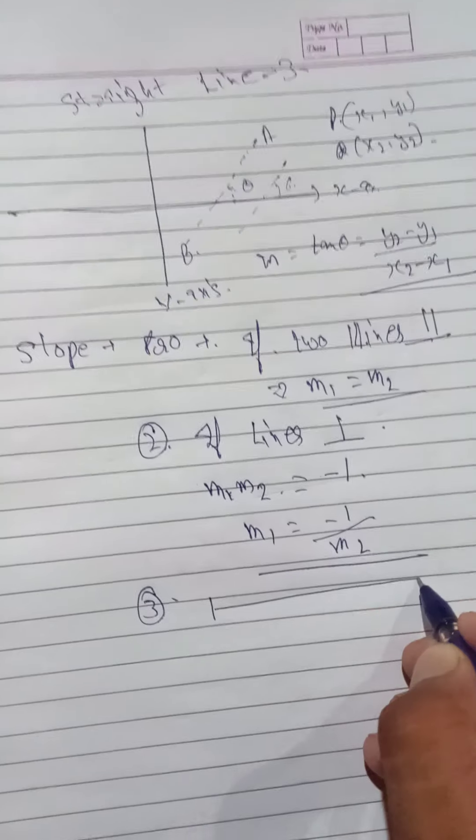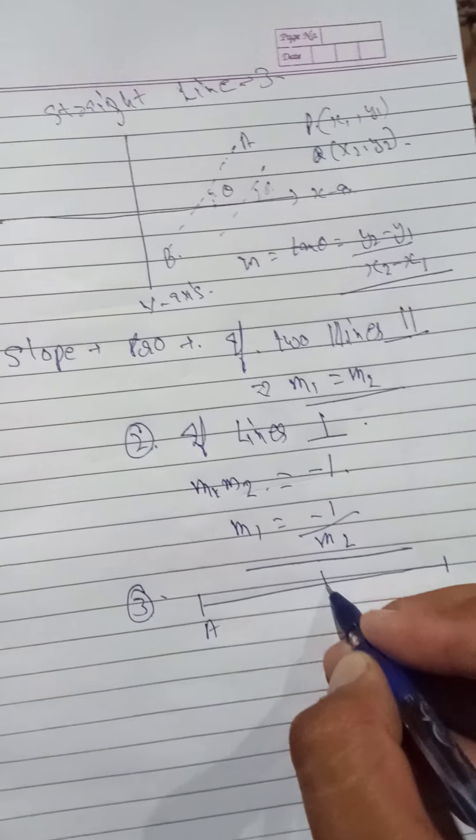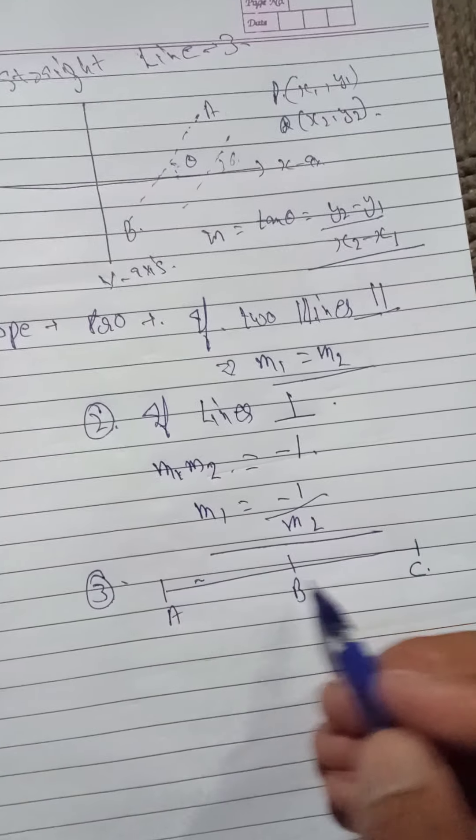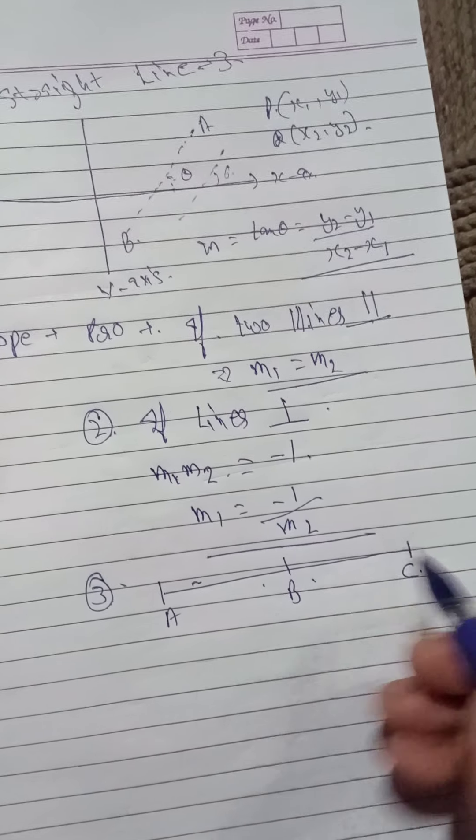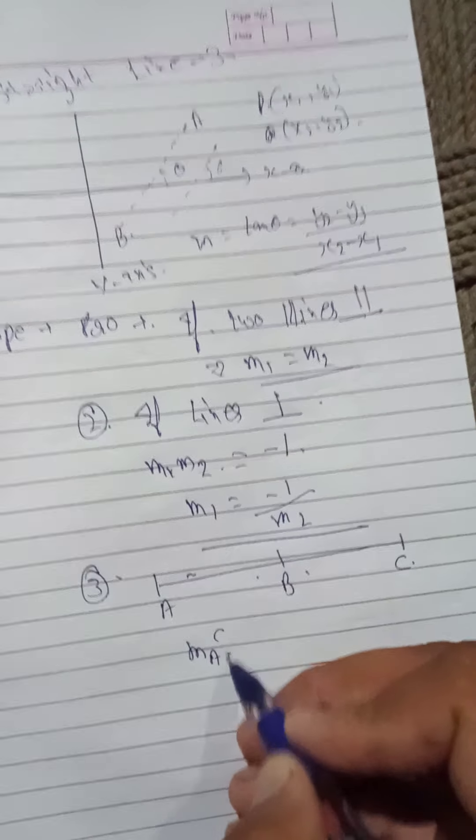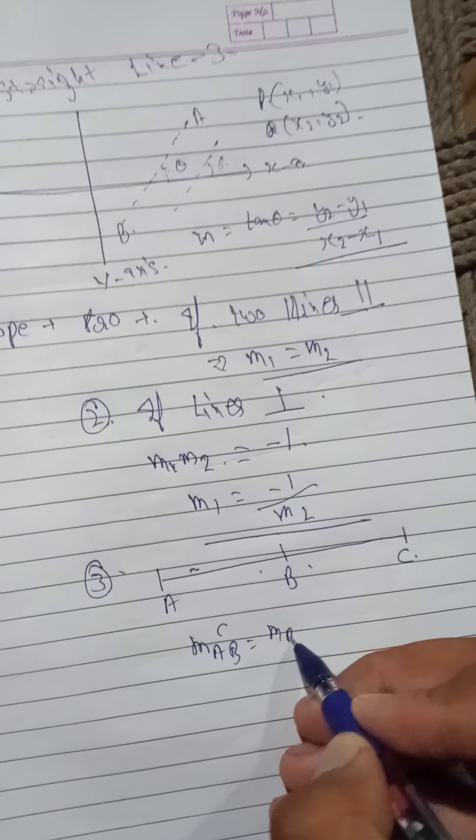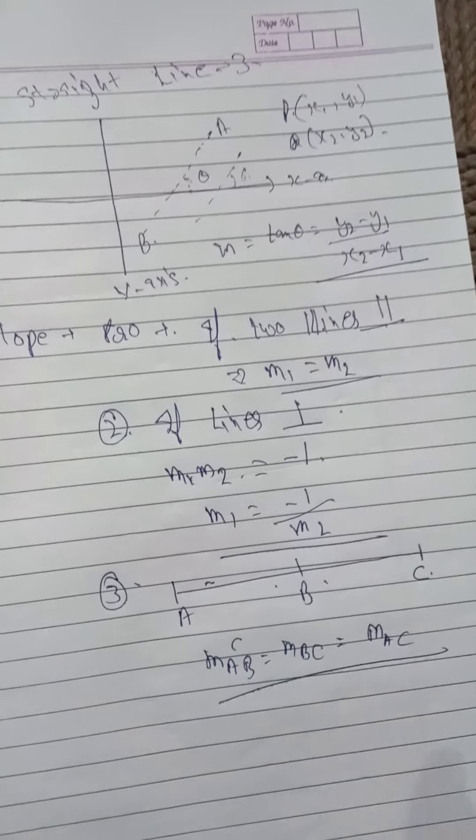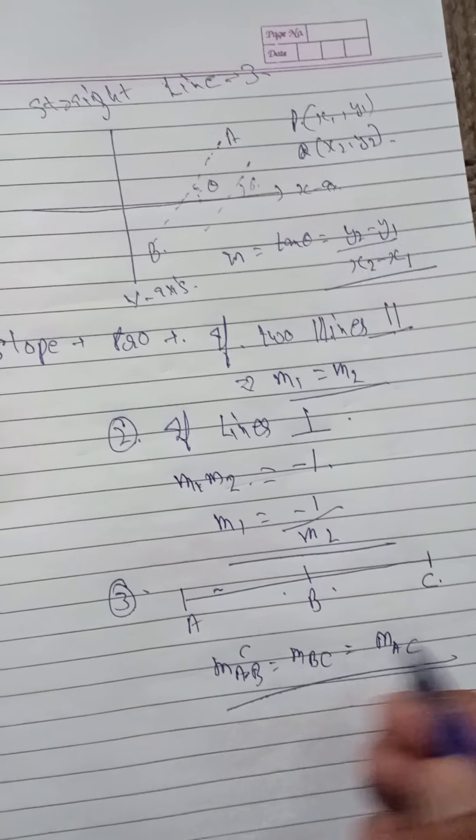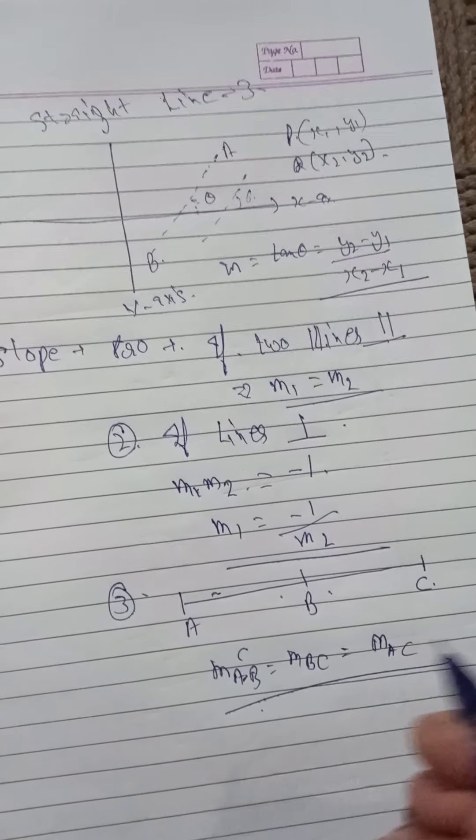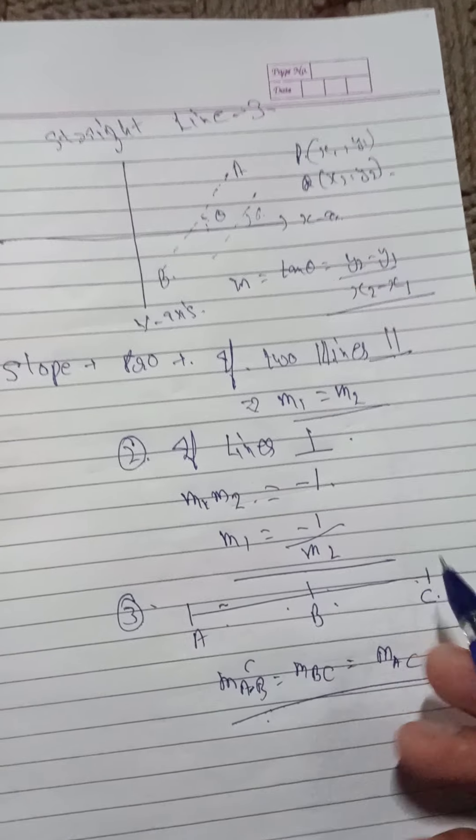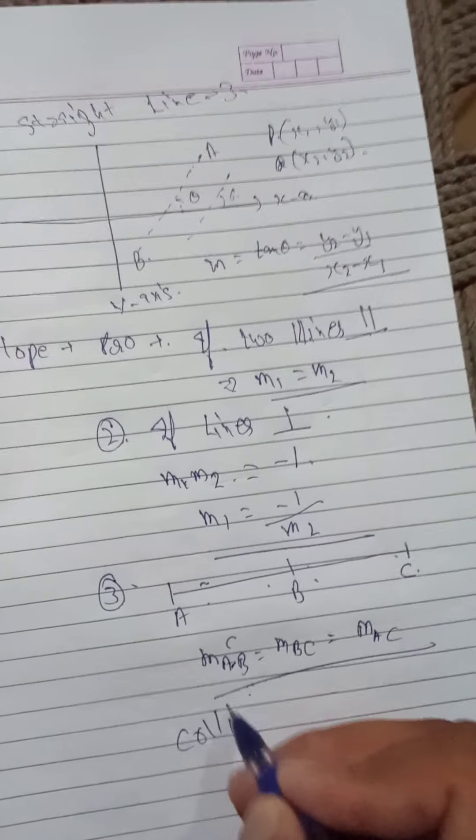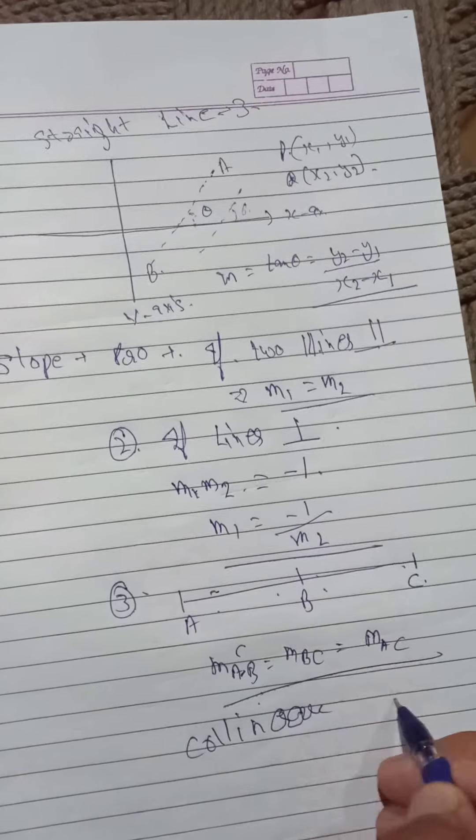Also, if three points A, B, and C are collinear, then the slope of AB will be equal to slope of BC. If the slope of two lines are equal, then these points lie on the same line or the points are collinear. This is another way to find the collinearity of points.